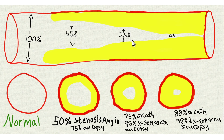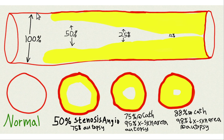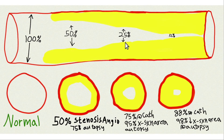In cardiac cath, what you're doing is estimating the narrowing of one segment by comparing it to the adjacent segment, with the underlying assumption that the adjacent segment is normal — 100% wide open. Here it is in side view and cross-sectional view. You can see a normal coronary artery that's 100% open. But when you assess a stenosis that's 75% narrow — 25% residual lumen open — on a cardiac cath, you're typically comparing it to an adjacent segment that's also diseased and also narrowed by atherosclerosis. So this estimate is going to underestimate the amount of disease.